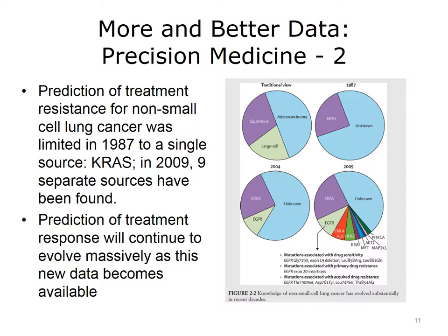The evolution of precision medicine is shown here. Historically, our knowledge was limited to three traditional cell types: squamous, large cell, and adenocarcinoma. And in 1987, one genetic mutation, KRAS, was discovered that represented about 27% of cases. In 2004, we found one more genetic mutation, EGFR, which represented about another 10% of cases. By 2009, we had added seven more genetic mutations for a total of nine, now diagnosing the genetic mutation in more than 50% of cases. This massive change is meaningful because we can attack the mutation in different ways. We won't use a drug where the genetic mutation gives resistance to it, instead opting for other therapies.